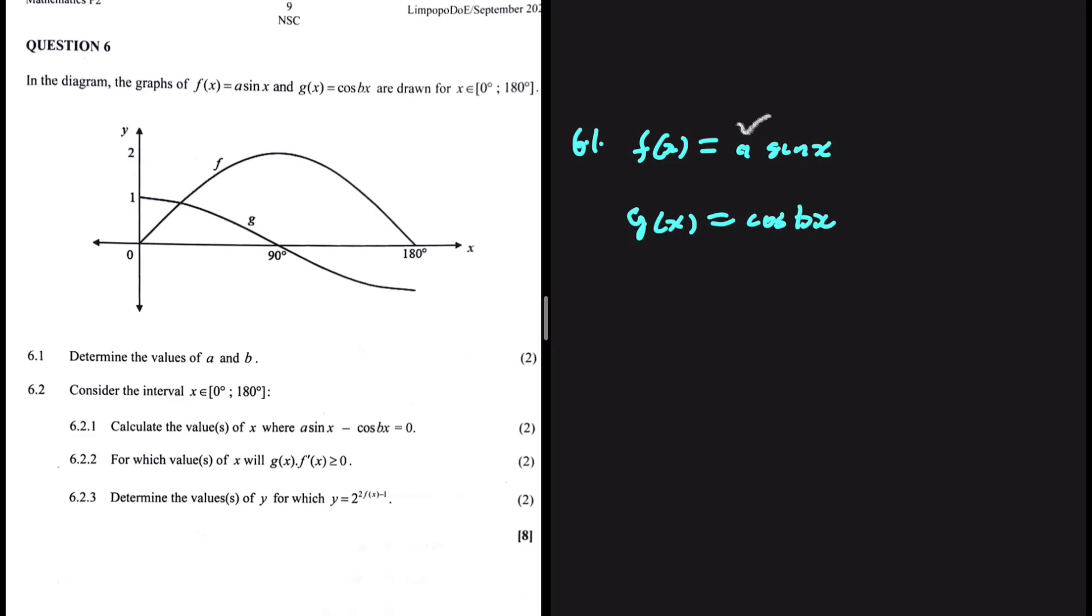So we're looking for the value of a. How can we simply determine the value of a? We can look at the highest point of our graph f of x because that is what a determines. It controls that highest value, the amplitude.